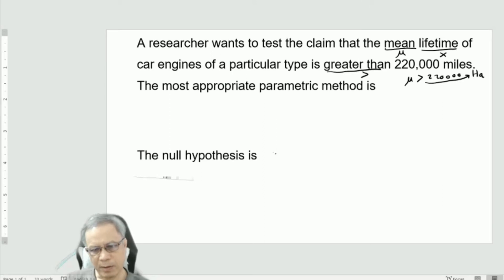And the claim is, the claim must be for Ha actually, if properly written. So this is mu is smaller than or equal to 220,000. Only numbers.